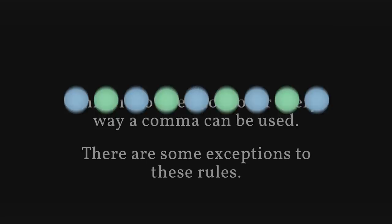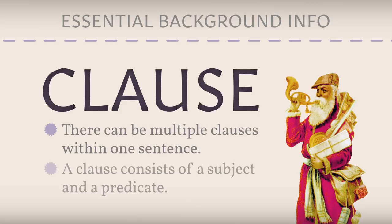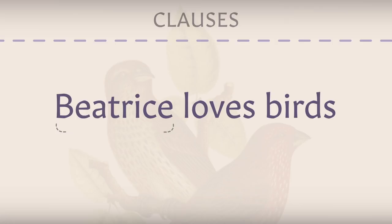Before we get into the comma talk, it is essential that you are familiar with the grammatical unit known as a clause. A clause is different from a sentence in that there can be multiple clauses within one sentence. A clause is a group of words that consists of a subject and a predicate, also known as an action. For example, "Beatrice loves birds" is a clause, with Beatrice being the subject and "loves birds" being the predicate. This also is considered an independent clause because it makes sense on its own.